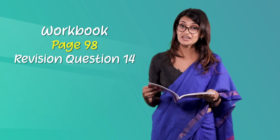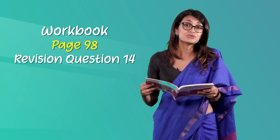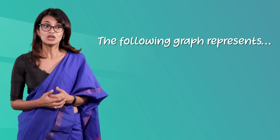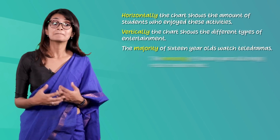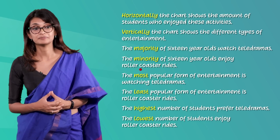Now let's look at Unit 8 in your workbook, page 98, revision question 14. You have been given a bar chart along with some phrases to help you describe it. The chart shows the popular forms of entertainment among a set of 16-year-old students. Study the chart and write a description. You can start with 'The following graph represents…' and use the phrases: horizontally, vertically, majority, minority, the most or least popular, the highest or lowest number.